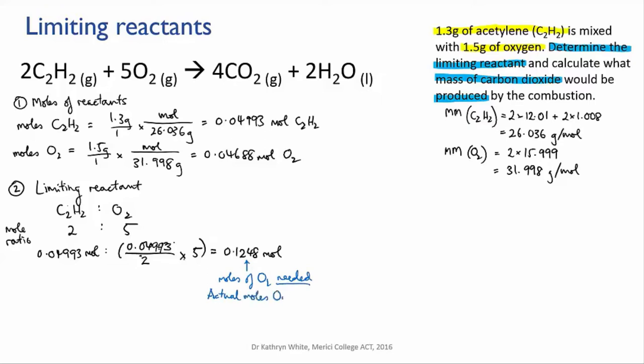Now I compare that value with the amount of oxygen that is present, which is 0.04688 moles. So what I have present is less than what I need. So that means the oxygen will run out first and it is my limiting reactant. And I now have what I need to do the rest of the calculation.